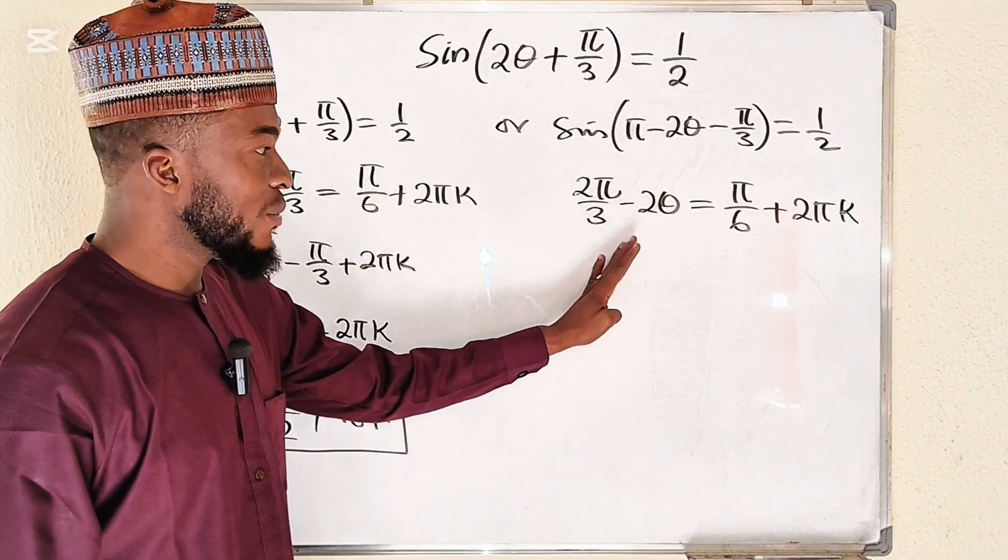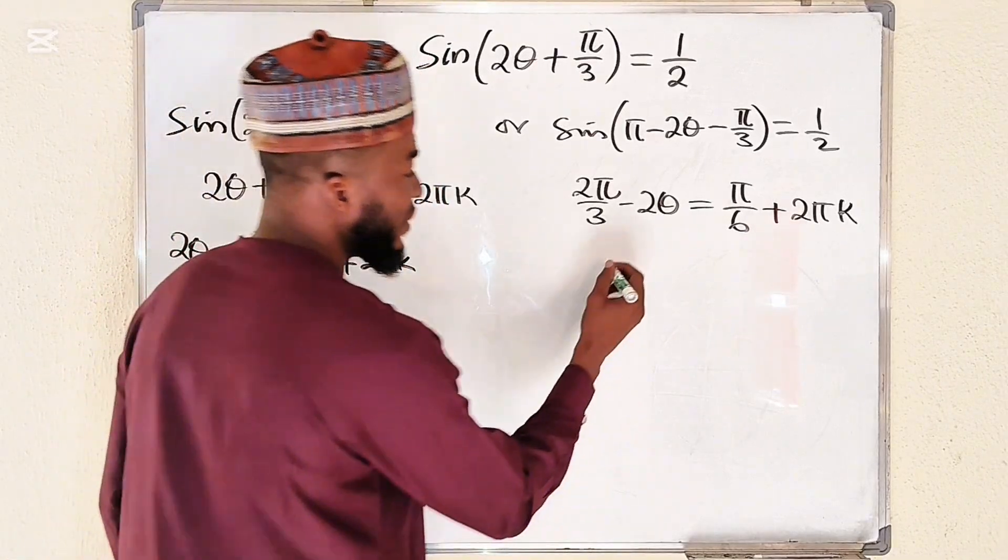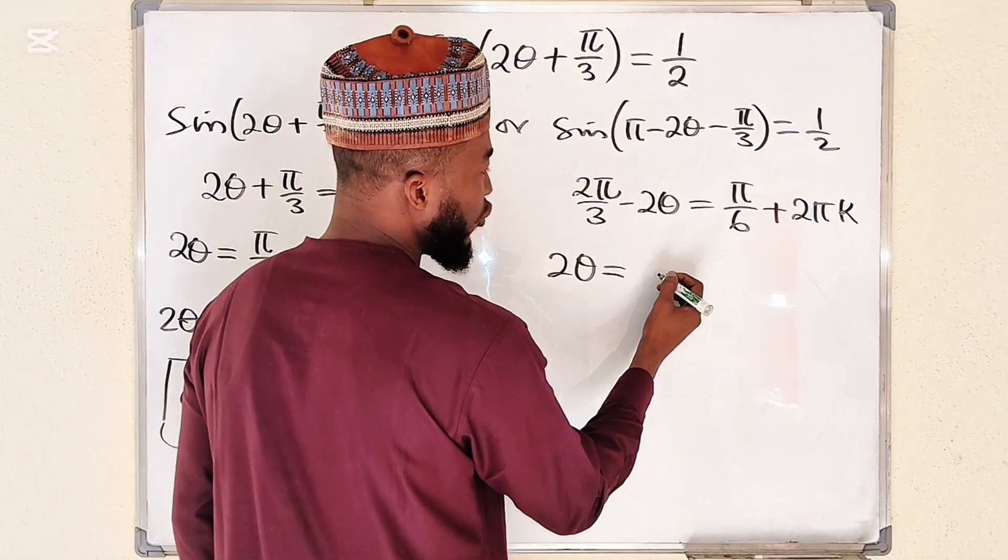Then we collect the like terms. You can take 2 theta to the other side and bring all of these terms to the left.